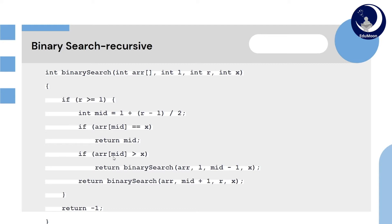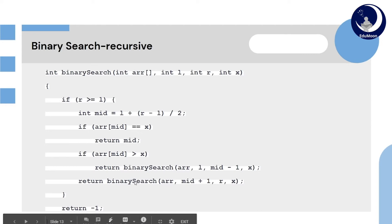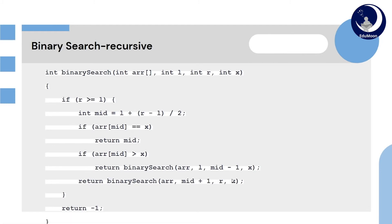If the value at mid is greater than x, then we will call binarySearch recursively with the array, l, and r equals to mid minus 1, and x — searching in the left half. Else, we call binarySearch with the array, l equals to mid plus 1, r, and x — searching in the right half.